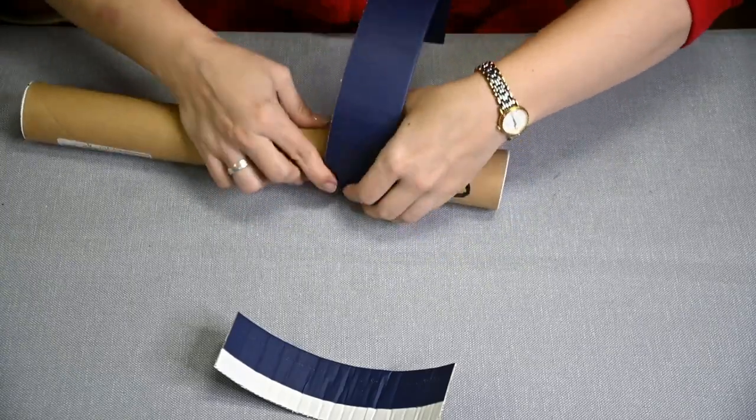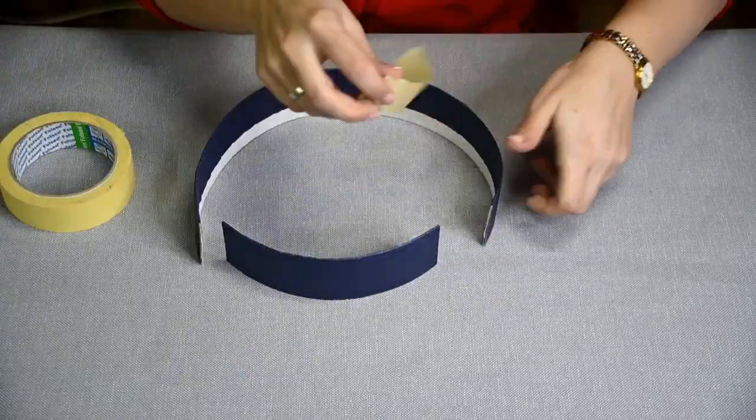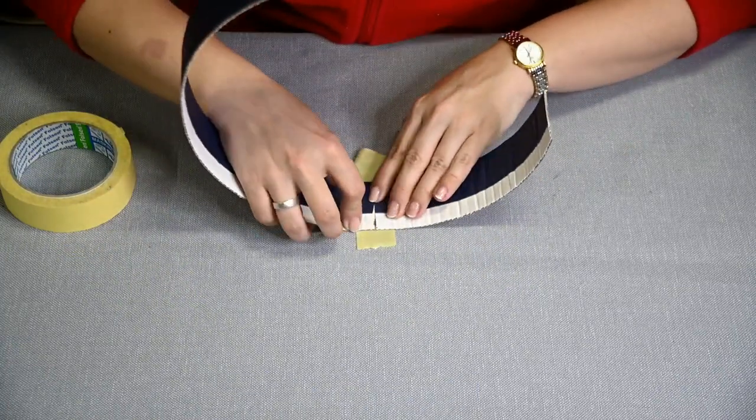Take any tube shaped item like a bottle, can, anything cylindrical and with its help bend the strip.